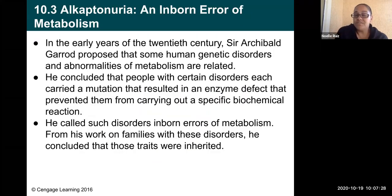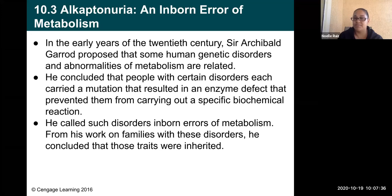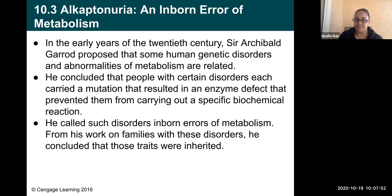In the early years of the 20th century, Sir Archibald Garrod proposed that some human genetic disorders have abnormalities of metabolism that are related. He concluded that people with certain disorders each carried a mutation that resulted in an enzyme defect preventing them from carrying out a specific biochemical reaction. He called such disorders inborn errors of metabolism, and from his work on families with these disorders, he concluded that those traits were inherited.